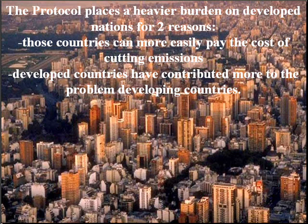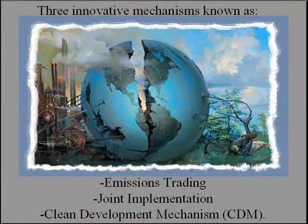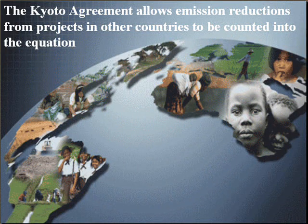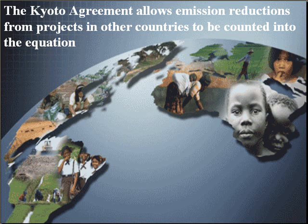This has two main reasons. Firstly, those countries can more easily pay the cost of cutting emissions. Secondly, developed countries have historically contributed more to the problem by emitting larger amounts of greenhouse gases per person than developing countries. In order to give parties flexibility in meeting their emission reduction targets, the Protocol developed three innovative mechanisms known as emissions trading, joint implementation, and the Clean Development Mechanism. As it makes no difference to the climate where in the world greenhouse gases are reduced, the Kyoto Agreement allows emission reductions from projects in other countries to be counted into the equation.